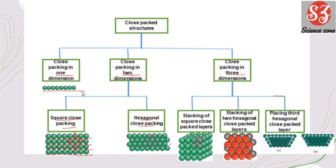In hexagonal close packing, the one-dimensional rows fit into the spaces between each other — they are not exactly above one another. If you take any particle and check its coordination number, it is 6, and joining those centers gives a hexagon — hence it is called hexagonal close packing. For close packing in three dimensions, there are types: stacking of square close packed layers, where each layer is exactly above the previous one (AAA type), forming a simple cubic structure.